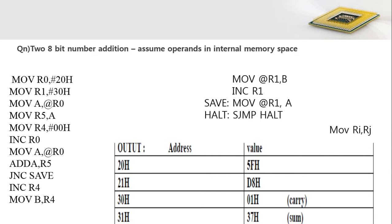Welcome back to this video tutorial. We will consider some program examples for the 8051. This example is for adding two 8-bit numbers where the numbers are present in internal memory. The first byte address, 20h, is loaded into R0 register and the second internal byte address, 30h, is loaded into R1 register.